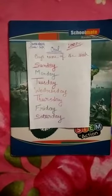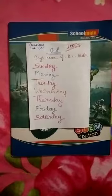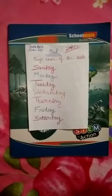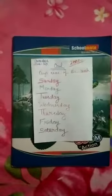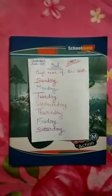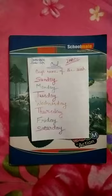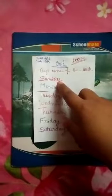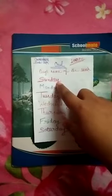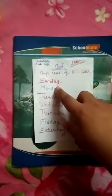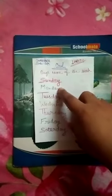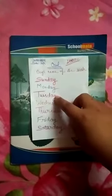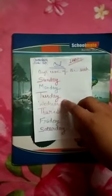So week mein kitnay days hotay hain, total kitnay days hotay hain, is video mein learn karne waale. Okay, so the first day, pehla din, woh Sunday se start karenge. Sunday jis din school chutti hota hai, jis din weekend hota hai. Okay, woh hota hai Sunday, us din school nahin jaate hai bachche. Okay, next day hota hai Monday, jis din se school jaana start karte hain. Okay, so Monday, Monday ke next day Tuesday, Tuesday ke next day Wednesday, Wednesday ke